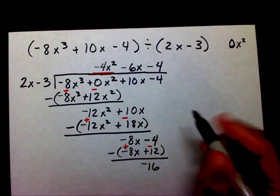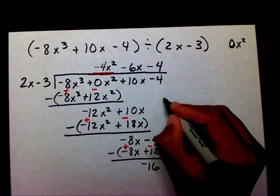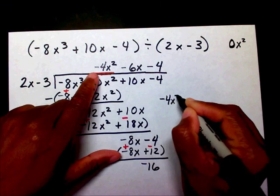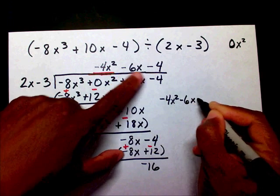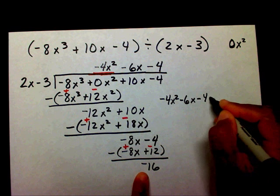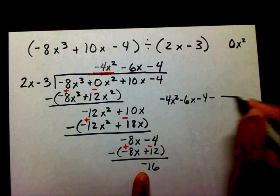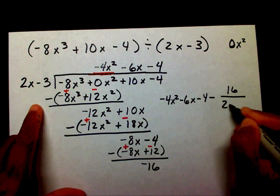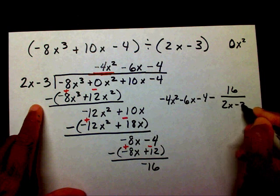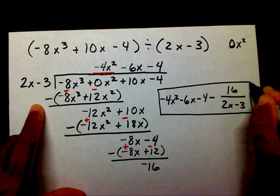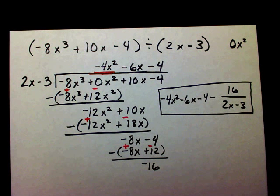And my final answer is going to be negative 4x squared minus 6x minus 4. Since that's a minus, I'm going to write minus 16 in my numerator and 2x minus 3 in my denominator. And this is your final answer.